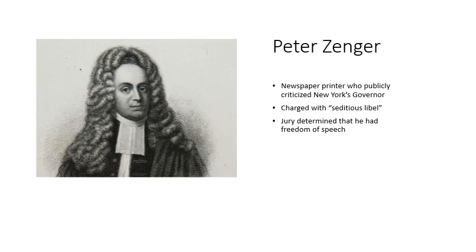Another idea of freedom is represented in the story of Peter Zenger, a printer and journalist in New York City who printed the New York Weekly Journal. In 1737, he was accused of seditious libel — basically slandering someone — because he criticized New York's governor William Cosby. The governor charged him with seditious libel, but the jury determined that Zenger had the freedom of speech and the right to criticize the governor. This became a symbol of the freedom of the press — the right to criticize your leaders — and would become one of the pillars of American society.